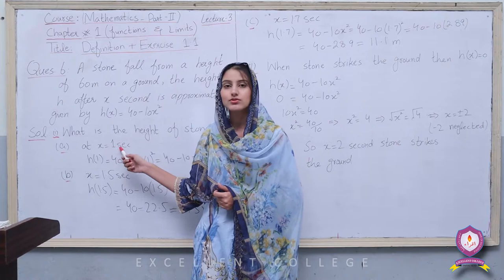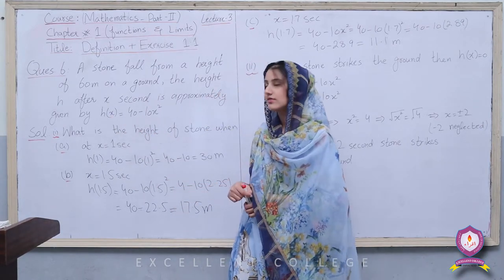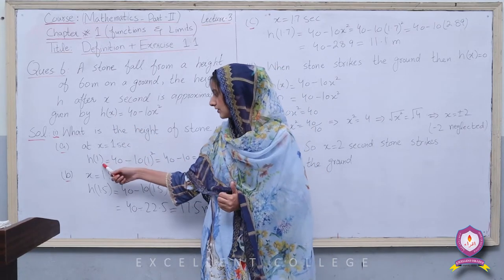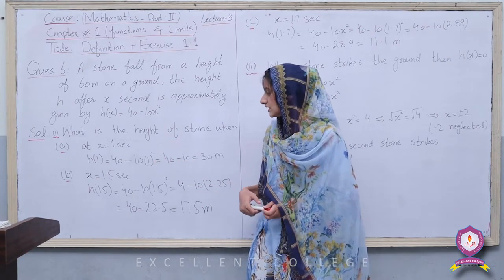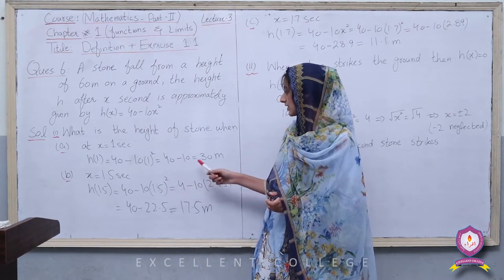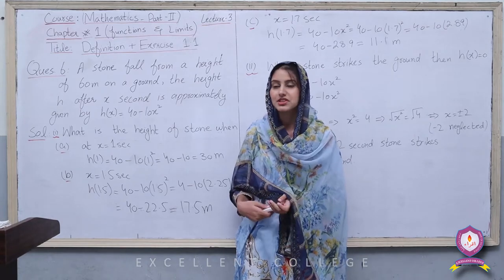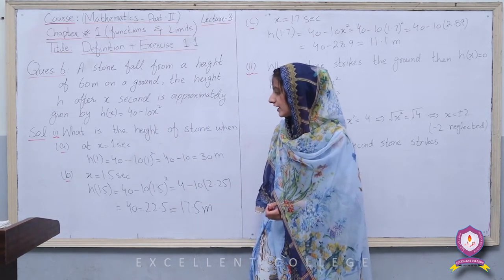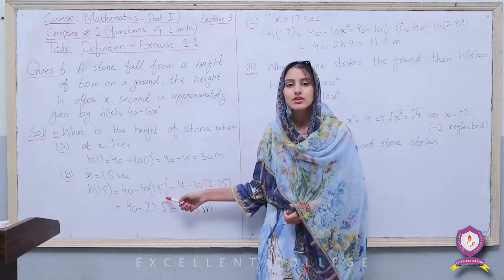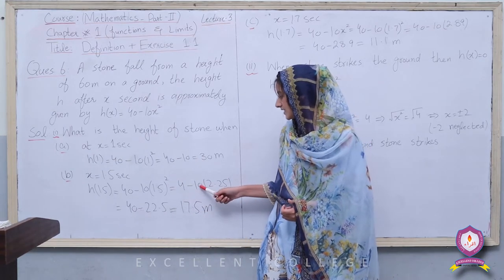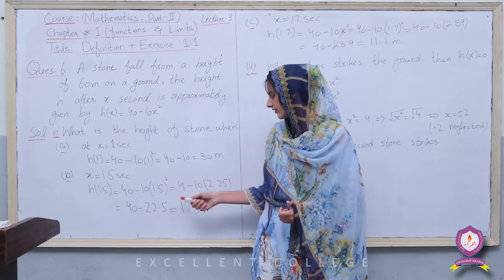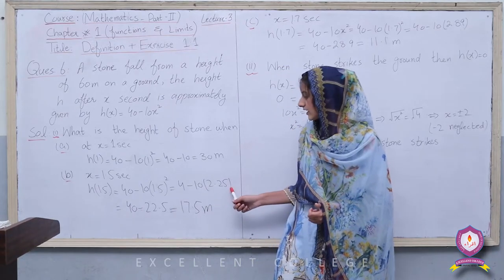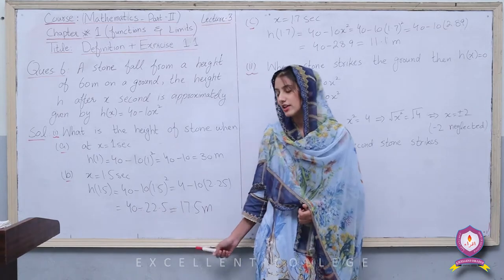Part (a): At x = 1 second, h(1) = 40 - 10(1²) = 40 - 10 = 30 meters. Part (b): At x = 1.5 seconds, h(1.5) = 40 - 10(1.5²) = 40 - 10(2.25) = 40 - 22.5 = 17.5 meters.